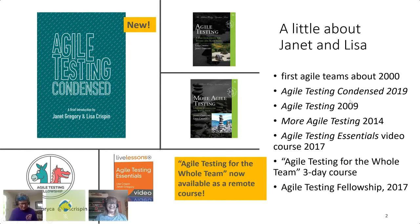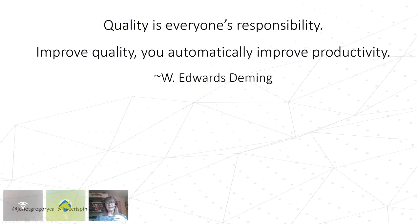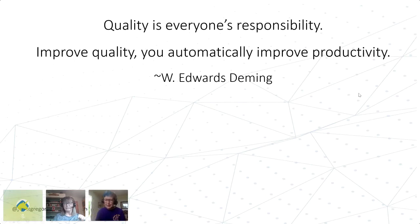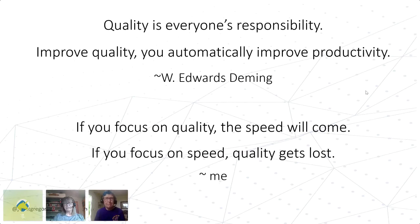In 1982, Edward Deming identified 14 key principles for business effectiveness. These principles are alive and well in good agile teams and organizations. Two of my favorite Deming quotes: 'Quality is everyone's responsibility,' and 'Improve quality, you automatically improve productivity.' My own quotes: 'If you focus on quality, the speed will come; if you focus on speed, the quality gets lost.' Both Lisa and I really believe the focus on quality needs to come first.